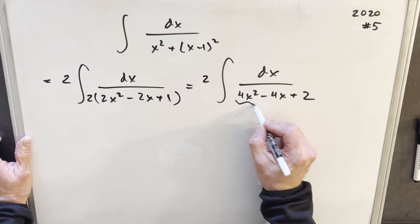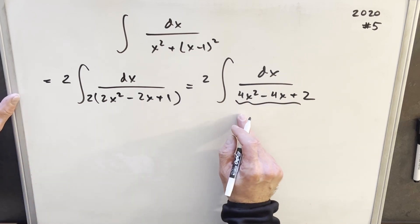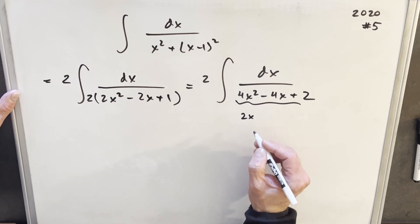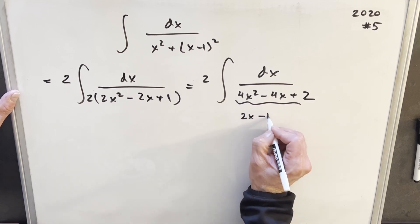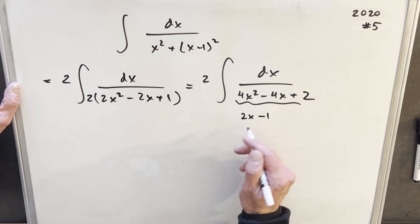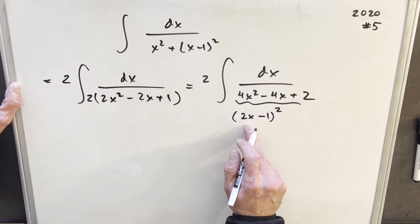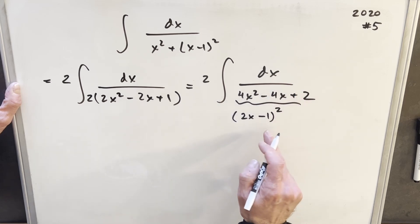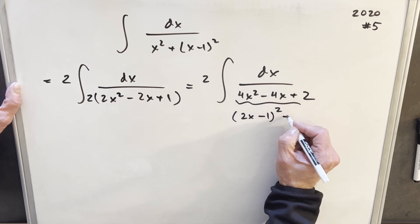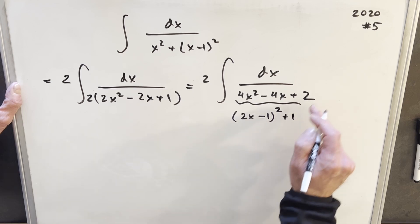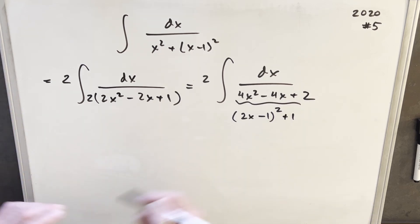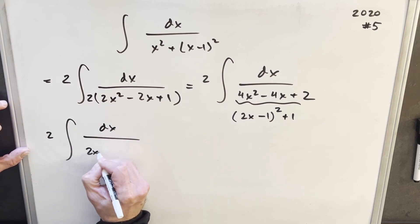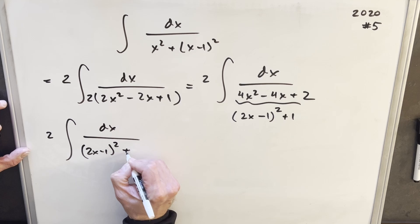From here, let's look at this denominator. I want to get the square root of this first term, 4x squared. So we're looking at 2x. Let's notice if I look at 2x minus 1 squared, we get back 4x squared minus 4x plus 1. Well, if we add another 1 plus 1, here's our 2. So let's rewrite it as 2 dx over 2x minus 1 squared plus 1.